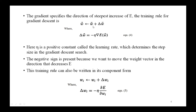The training rule is: w-vector equals w-vector plus delta w-vector, where delta w-vector equals minus eta times the gradient of E with respect to w-vector. Here eta is a positive constant called the learning rate, which determines the step size in the gradient descent search. The negative sign is present because we want to move the weight vector in the direction that decreases E.